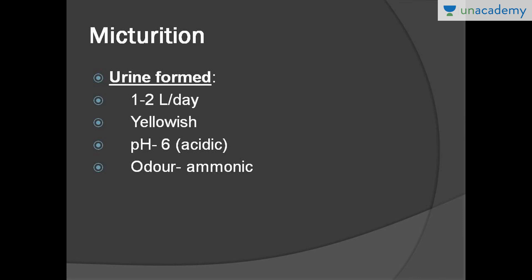Some facts about urine: we form around one to two liters per day, depending on hydration status. Urine is normally yellowish in color. Dark yellow may indicate dehydration. Red-colored urine signifies hematuria, which is present in various conditions like nephritis and glomerulonephritis. The pH is slightly acidic and urine has an ammoniacal odor.